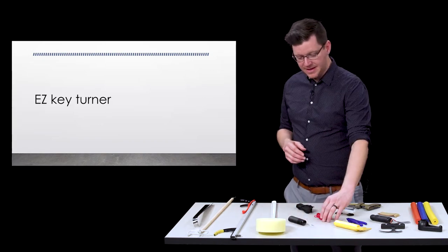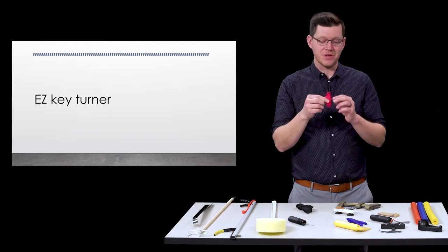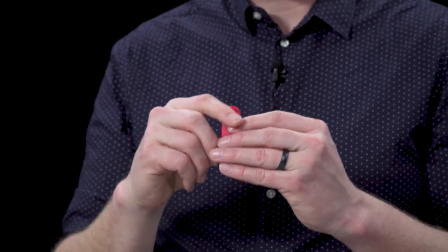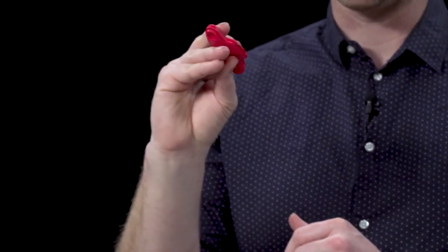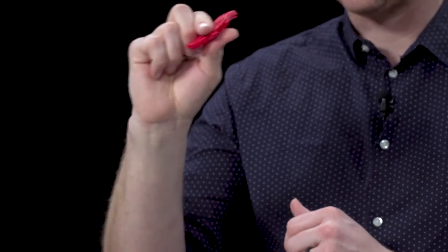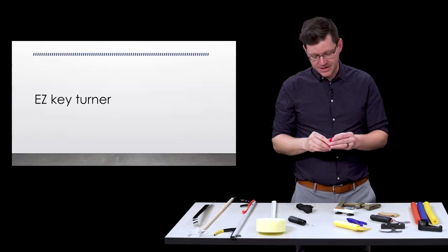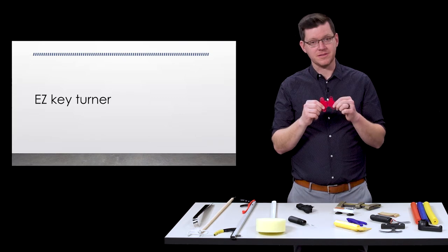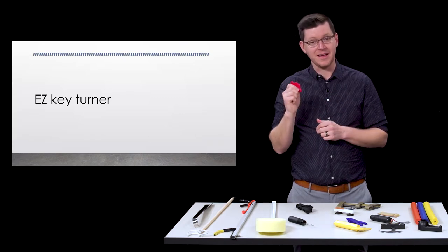Along with that, things like the easy key turner. This will hook onto any key like especially house keys and allow it to be a little more easier grip that you can turn it without having to have really strong pinch strength. You just insert your key into the little slot here and it makes your key a lot easier to hold.